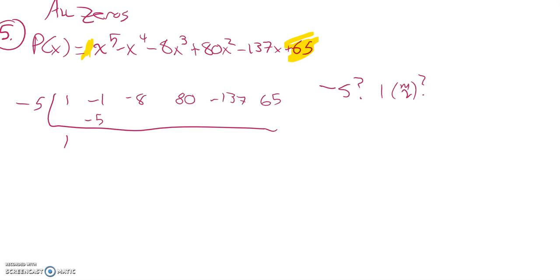Bring down the 1, multiply, and then we can add. Then we'll multiply, that's 30. So 30 minus 8 is 22, and then we will multiply -5 times 22, which is -110. -110 plus 80, that would be -30.